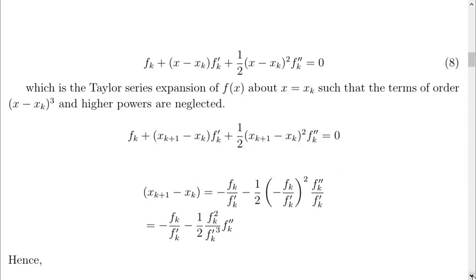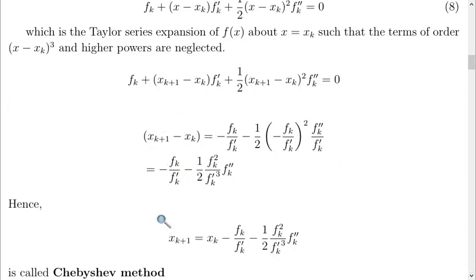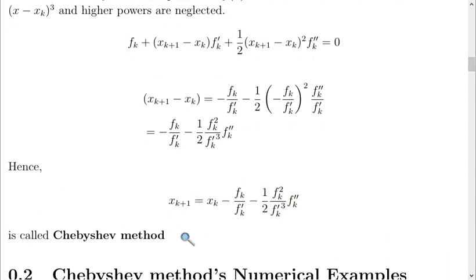We can rearrange this to give f of k plus 1 equals to s sub k minus fk over f prime of k minus 1 over 2 fk squared over f prime cubed k then f double prime k. The iteration of this type is what we refer to as a Chebyshev method. The iteration of this type is what we refer to as a Chebyshev method. Thank you.